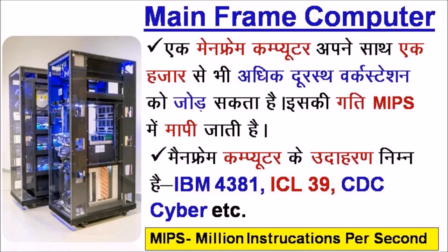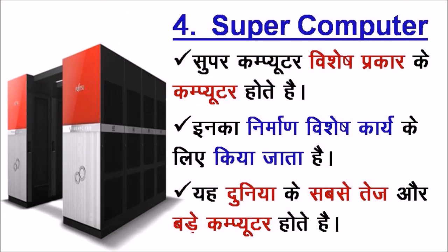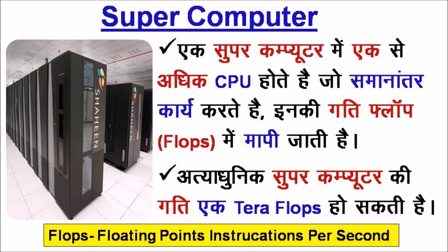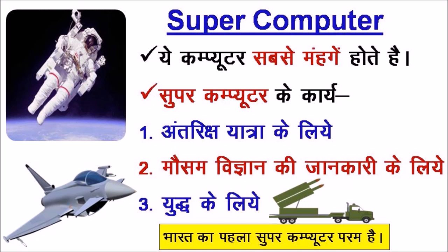Mainframe Computer के उदाहरण हैं IBM 4381, ICL 39, CDC Cyber आदि। चौथा है Super Computer — Super Computer विशेष प्रकार के Computer होते हैं, इनका निर्माण विशेष कार्य के लिए किया जाता है। यह दुनिया के सबसे तेज़ और बड़े Computer होते हैं। एक Super Computer में एक से अधिक CPU यानी Central Processing Unit होते हैं जो समानांतर कार्य करते हैं। इनकी गति FLOPS यानी Floating Point Instructions Per Second में मापी जाती है। अत्याधुनिक Super Computer की गति एक Tera FLOP हो सकती है। ये Computer सबसे महँगे होते हैं। Super Computer के कार्य हैं — अंतरिक्ष यात्रा के लिए, मौसम विज्ञान की जानकारी के लिए, युद्ध के लिए। भारत का पहला Super Computer PARAM है।